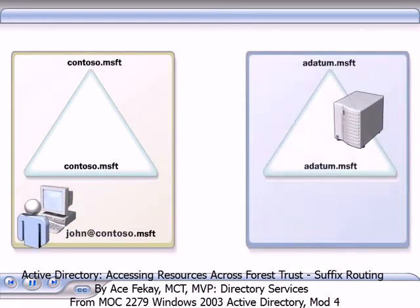However, if John wants to access resources in the adatum.msft domain in a separate forest, you must establish a forest trust. When you create a forest trust, Active Directory enables routing for all non-conflicting UPN suffixes between the forests.